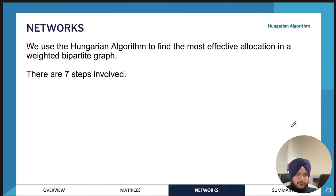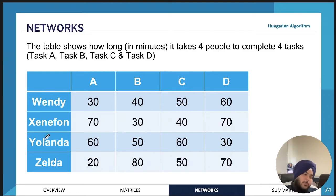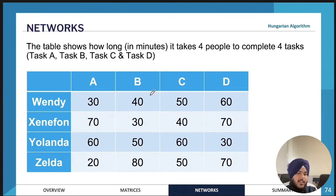Now we'll look at the Hungarian algorithm, which has seven steps. We use the Hungarian algorithm when there is a time associated with each task. In this table we have four people working on a project with four tasks, and the time taken by each person in minutes is listed. For example, Wendy can do task A in 30 minutes, task B in 40 minutes, task C in 15 minutes, and task D in 60 minutes.